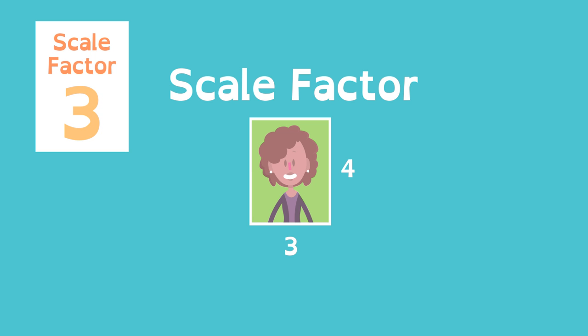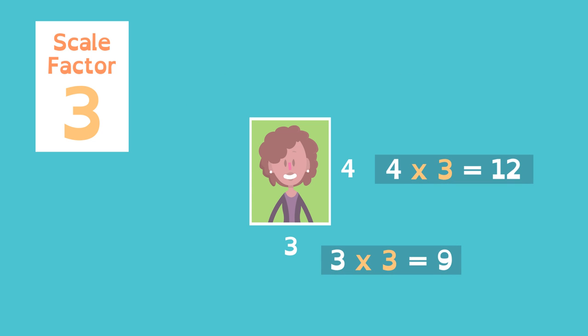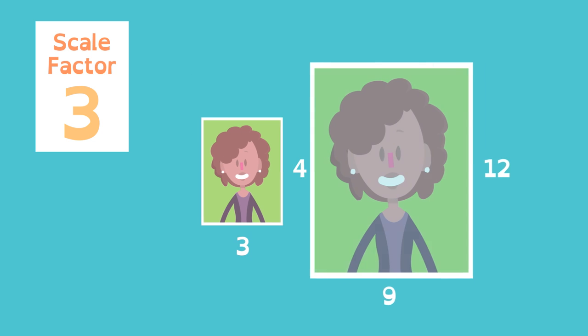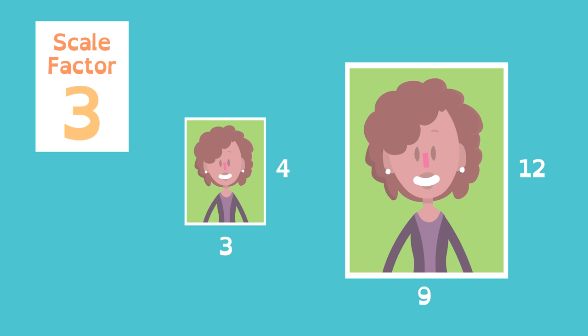If the scale factor is 3, the dimensions from the center of dilation are multiplied by 3. Different sizes, same proportions, same shape.